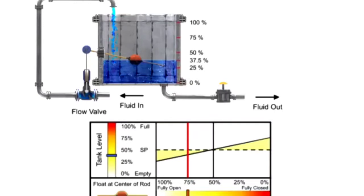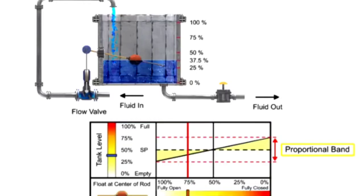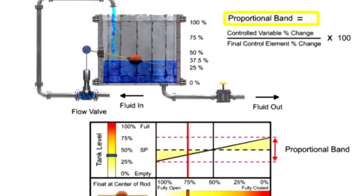Proportional band is defined as the percentage of change in the controlled variable which causes the final control element to go through 100% of its operating range. Proportional band is calculated by dividing the controlled variable percent change by the final control element percent change, multiplied by 100.